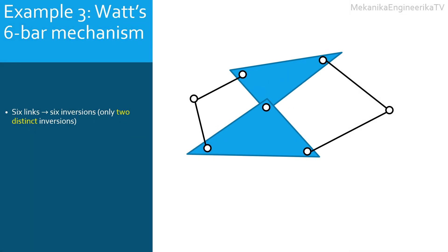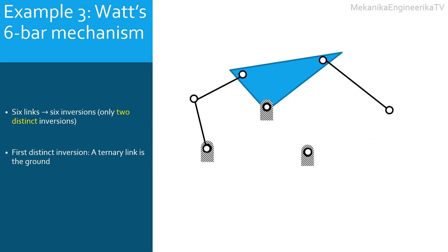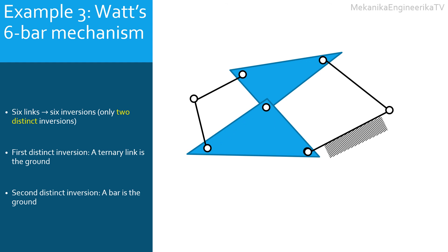The third example considers the inversions of the Watt 6-bar mechanism. Here there are six links: two ternary links and four bars, giving six possible inversions. However, only two inversions are distinct. The first distinct inversion is obtained by grounding the bottom ternary link; grounding the other ternary link will lead to a similar inversion. The kinematic diagram disregards the grounded link and depicts only the connections with the ground. The second distinct inversion is obtained by grounding a bar; grounding any other bar will lead to a similar inversion.